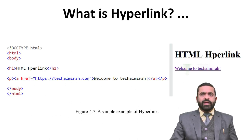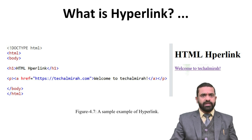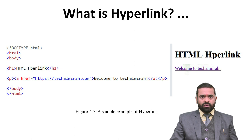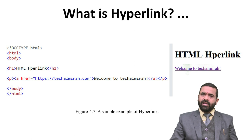Here we have an HTML hyperlink example titled 'Welcome to TechAlmira.' The code has: `<!DOCTYPE html>`, `<html>`, `<body>`, an `<h1>` heading 'HTML Hyperlink', then a paragraph tag containing `<a href="https://techalmira.com">Welcome to TechAlmira</a>`, followed by closing paragraph, body, and html tags.